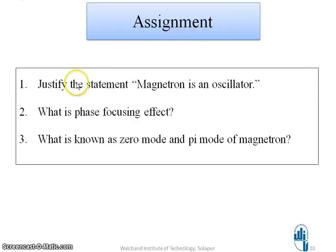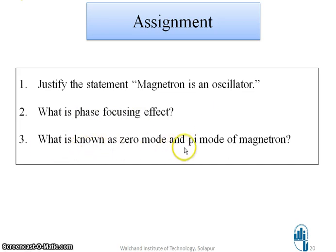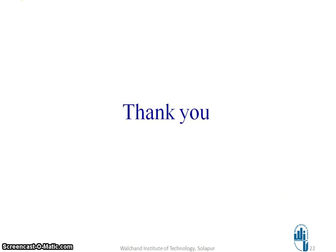Assignment questions: Justify the statement that magnetron is an oscillator. Write the answer to what is phase focusing effect. Write what is known as the zero mode and pi mode of magnetron. These are a few of the references used for creating this video. Thank you. The next video will cover more on the magnetron — please click on the next video.